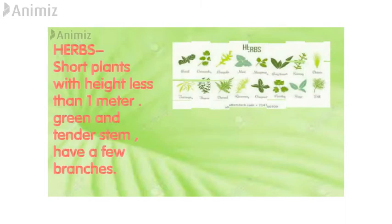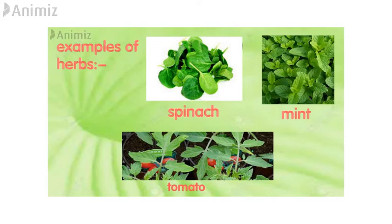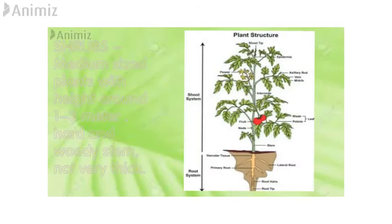Herbs are short plants with height less than 1 meter. They have green and tender stem and have a few branches. Examples of herbs are tomato, spinach and mint.